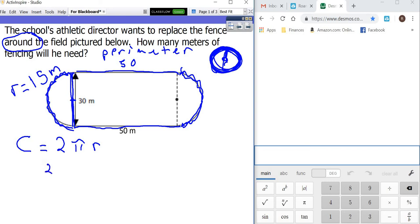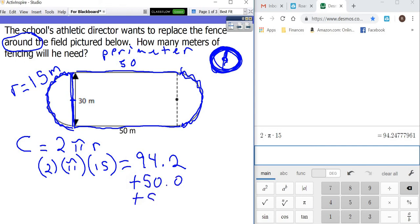So I'm going to say 2 times pi times a radius of 15. And then I'm going to come over here, put that in my calculator. 2 times pi times 15, enter, gives me 94.2.